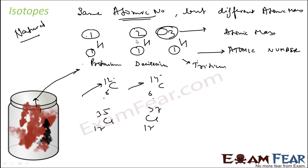Isotope is defined as the atom of the same element having the same atomic number but different atomic mass. Most elements consist of a mixture of isotopes. For example, carbon-12 is almost 99.9 percent and carbon-14 is almost 0.5 percent. If we talk about chlorine, chlorine-35 is almost 75 percent and chlorine-37 is almost 25 percent.